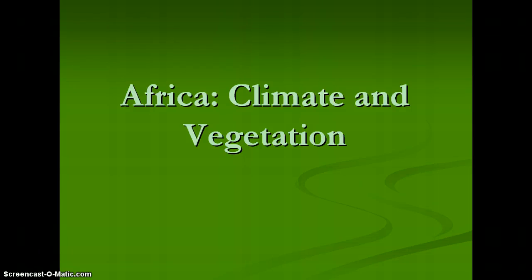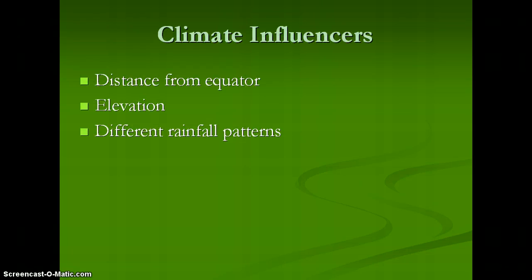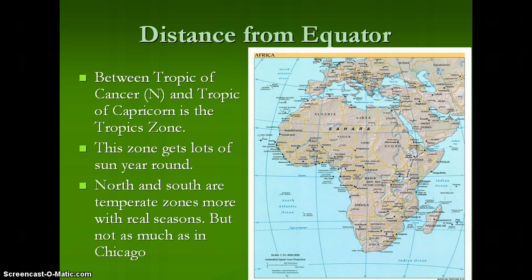Africa: climate and vegetation. The main things that influence the climate are the distance from the equator, the elevation above sea level, and the different rainfall patterns that occur, mainly due to monsoons.